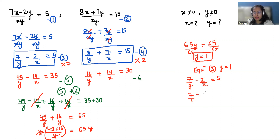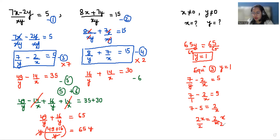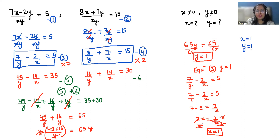Substituting y equals 1: 7 by 1 minus 2 by x is equals to 5, so 7 minus 5 is equals to 2 by x, which gives 2 equals 2 by x. Multiplying both sides by x and then dividing both sides by 2, the value of x is also 1. So x is equals to 1 and y is equals to 1. I hope it's clear and you find it useful — please give us a thumbs up and subscribe to my channel.